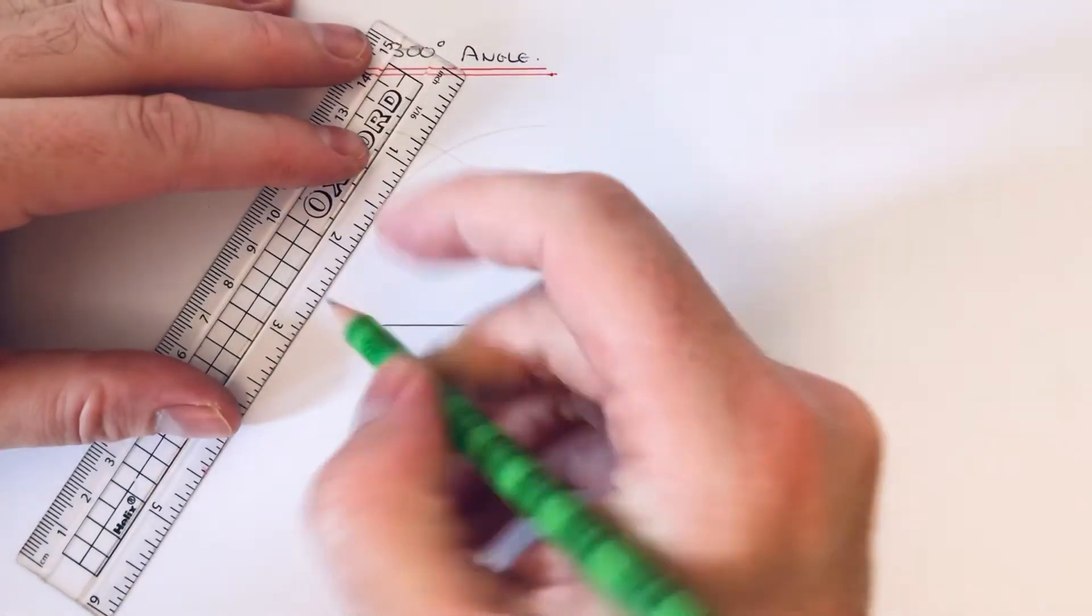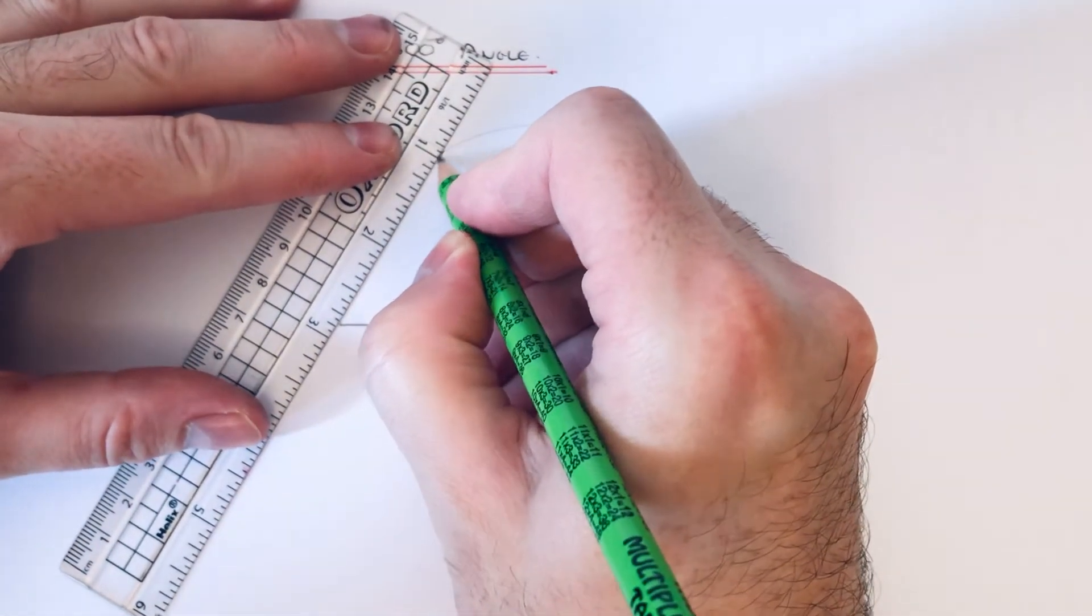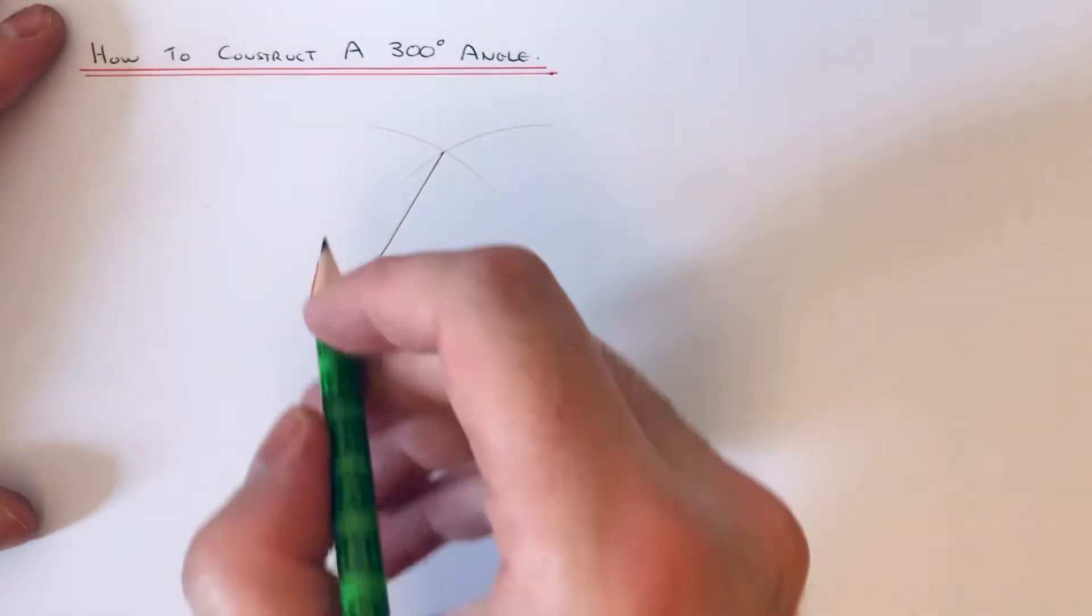From the left edge to the intersection point, draw a line. Then we need to just mark in a 300 degree angle,